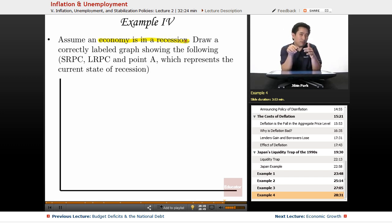But on this graph here, don't be confused when you see the recession - draw exactly what you would do otherwise, and then analyze where the points would be to see where recession would occur on a Phillips curve. Assume an economy is in a recession. Draw a correctly labeled graph showing the following: the SRPC, LRPC, and point A, which represents the current state of recession.